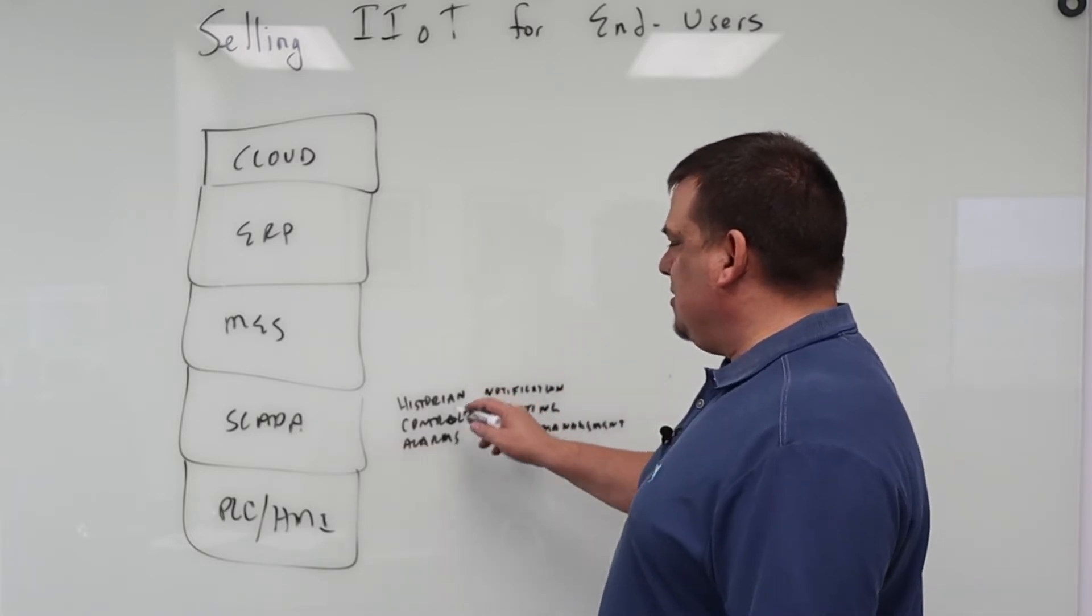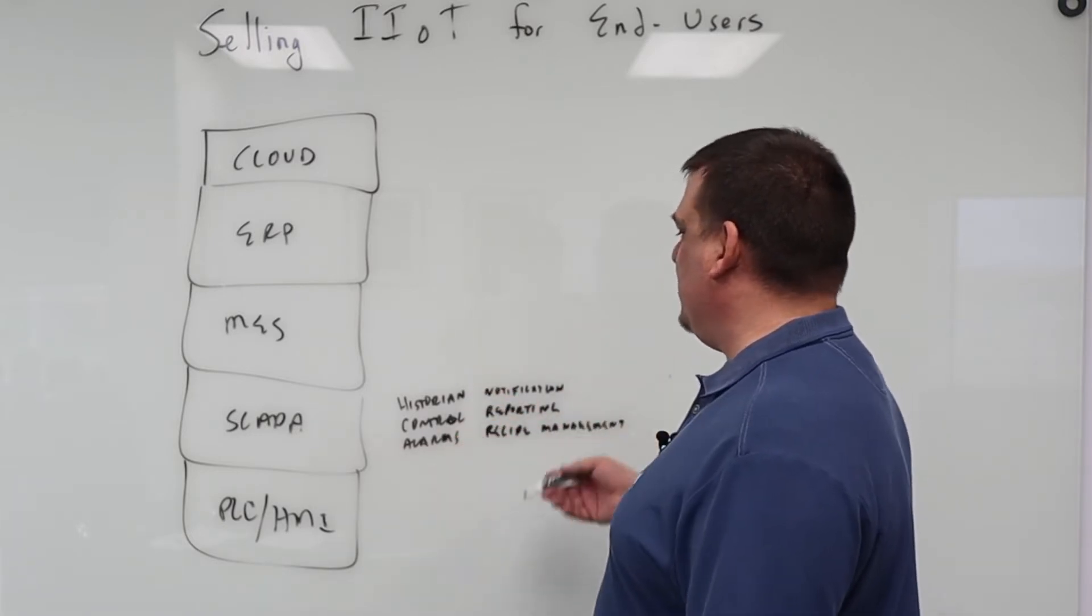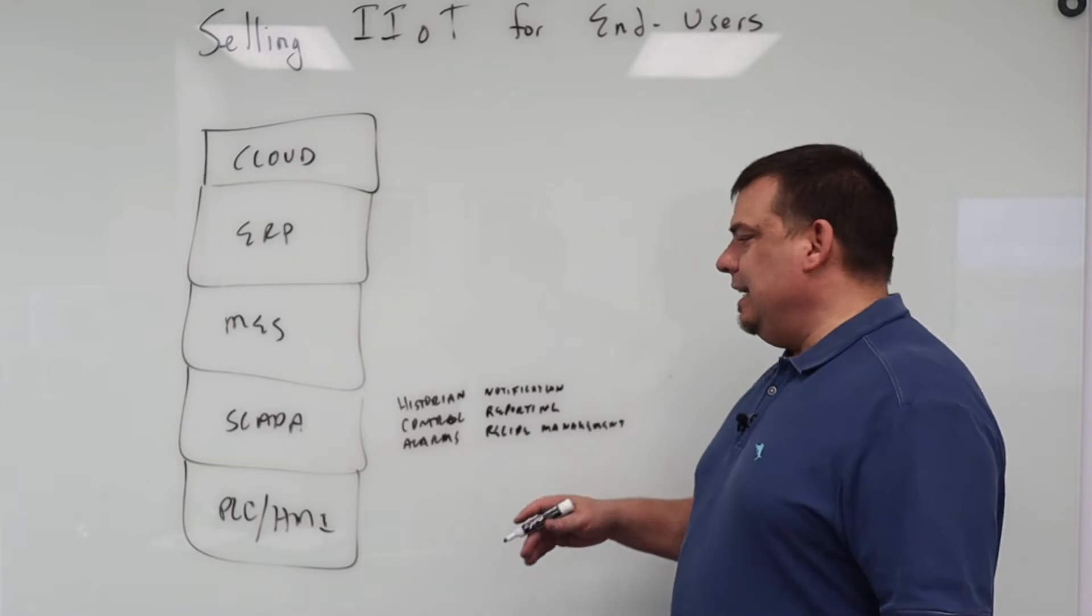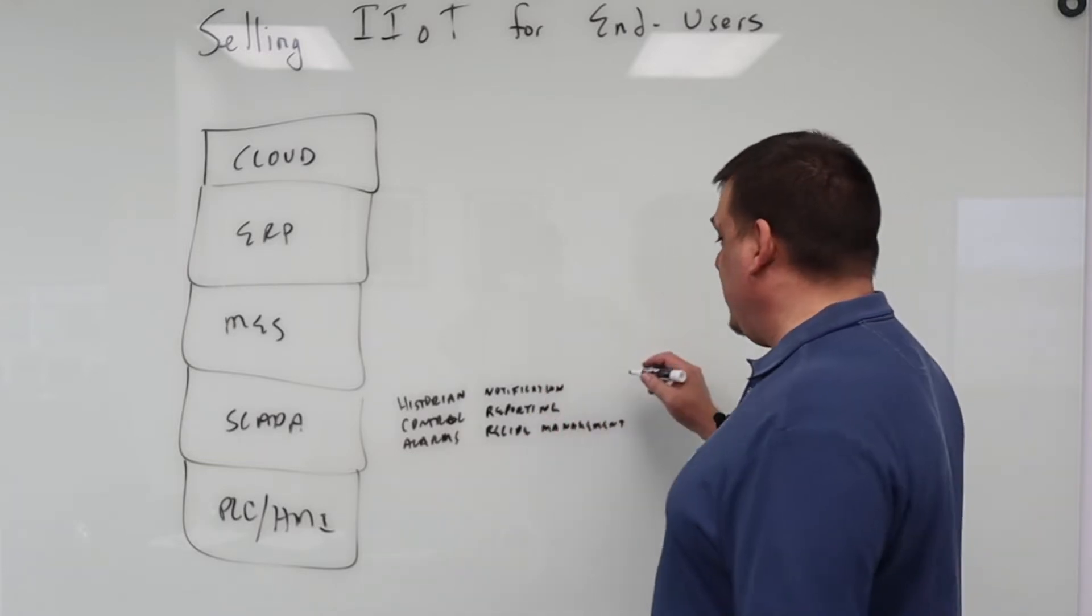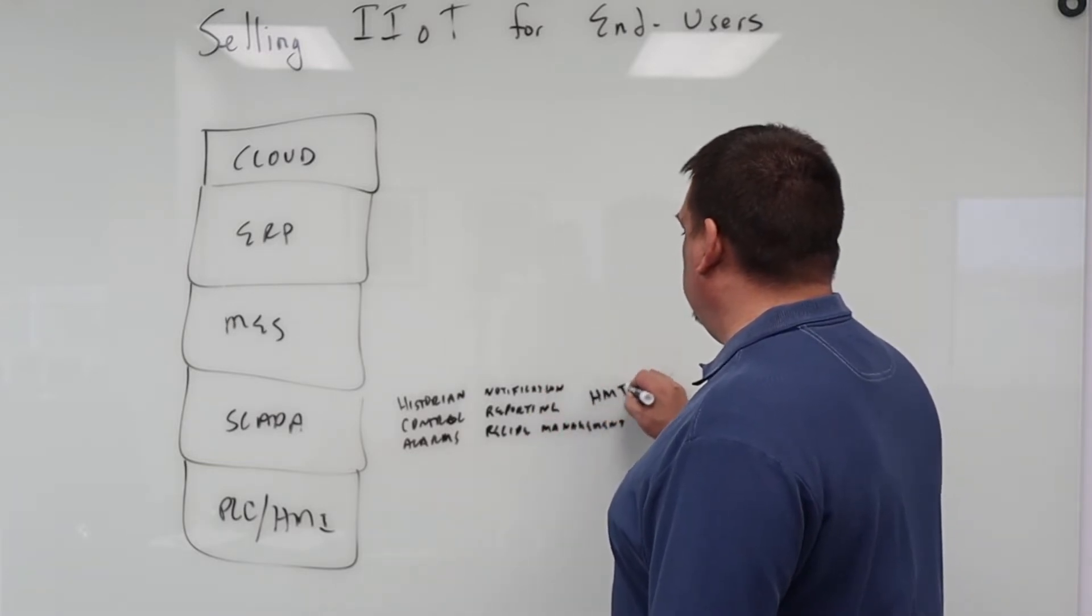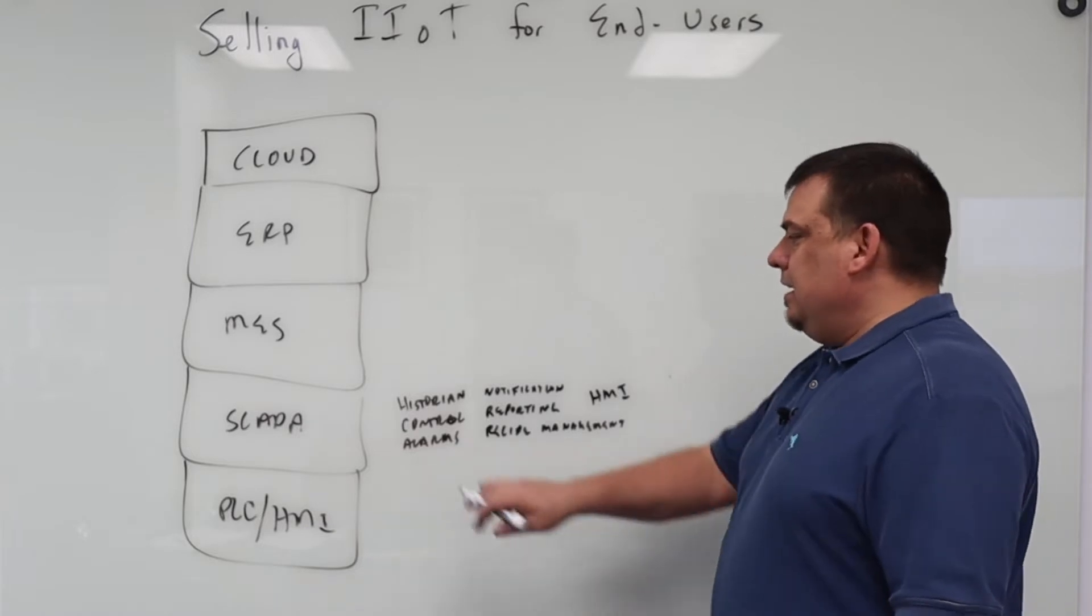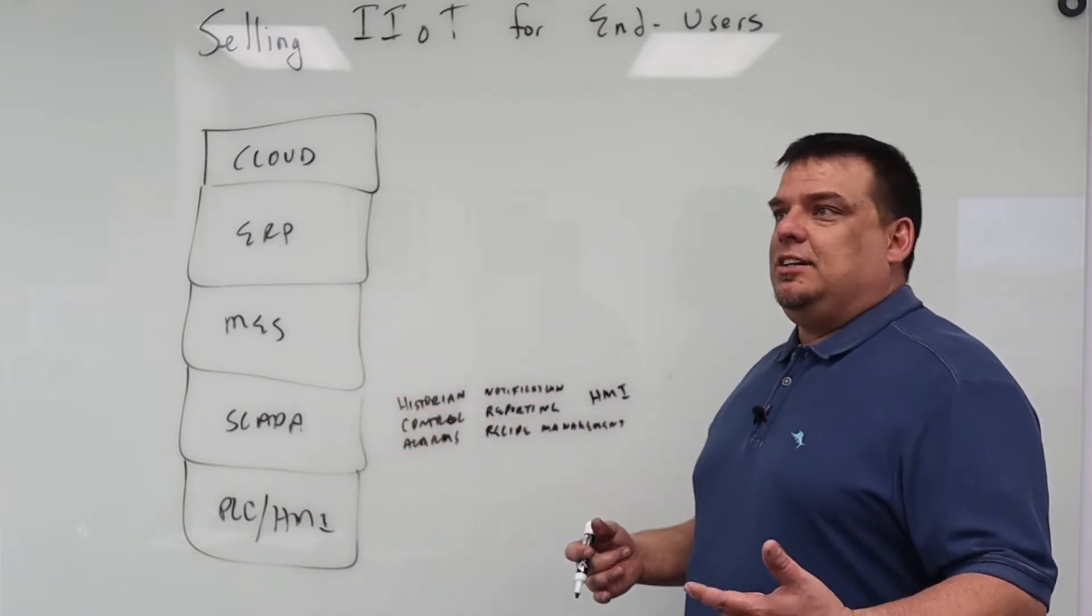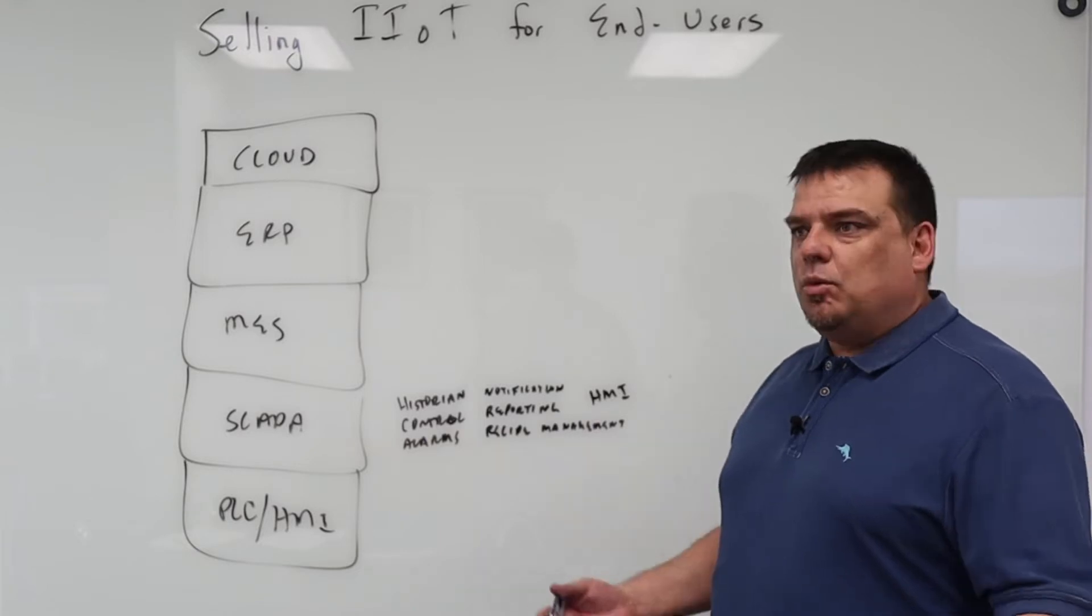So what you've got is historian control, alarms, recipe management, reporting, and notification. You have other stuff as well. You have HMI functionality, all the human machine interface stuff. So historians are really important component of the SCADA system. Why?